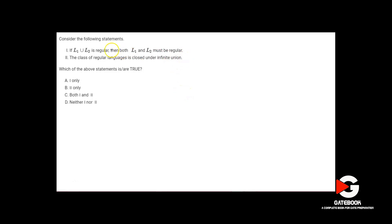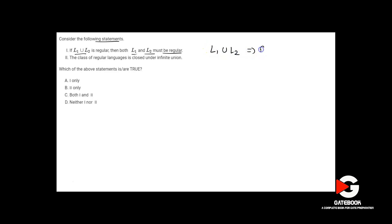Let's solve this question. Statement 1 is given: if L1 union L2 is regular, then both L1 and L2 must be regular. Let's see whether this statement is true or false. This statement is actually false — L1 union L2 being regular does not imply both L1 and L2 are regular.